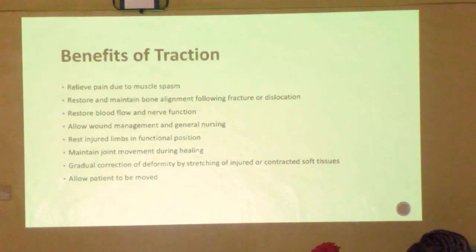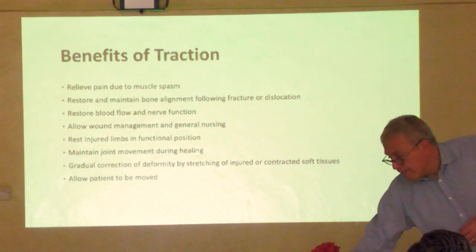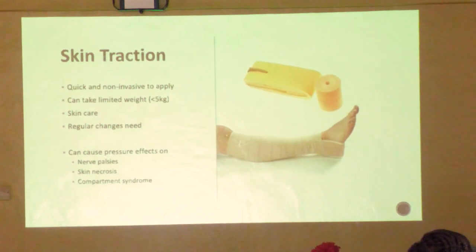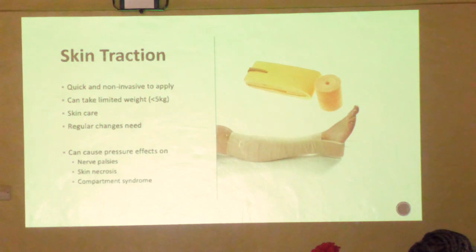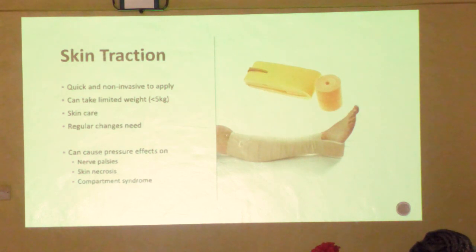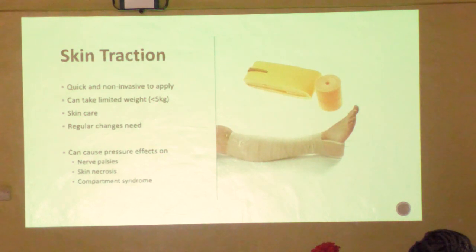It also allows the patient to be moved. The first traction we put on when a patient arrives is skin traction. We think of skin traction as very simple and easy to apply, but done badly it can be disastrous; done well it can be very good. You don't put unlimited weight on because most of our limbs are conical so the traction will slip.